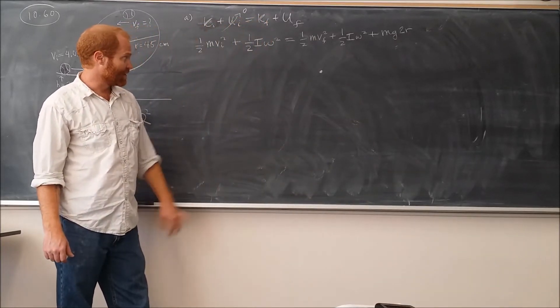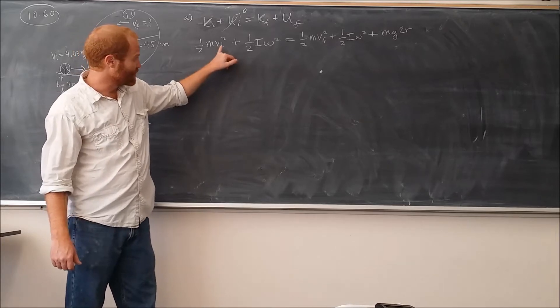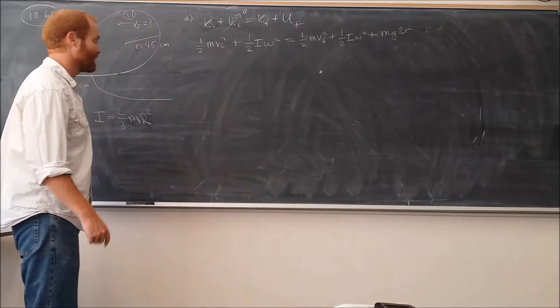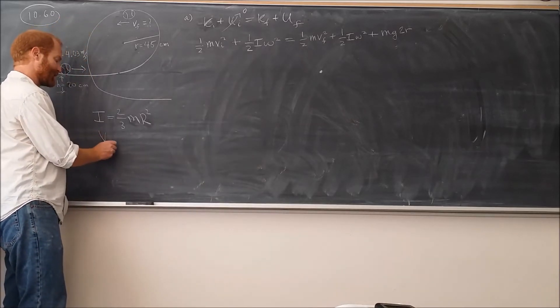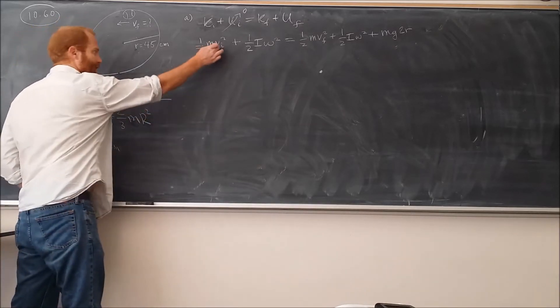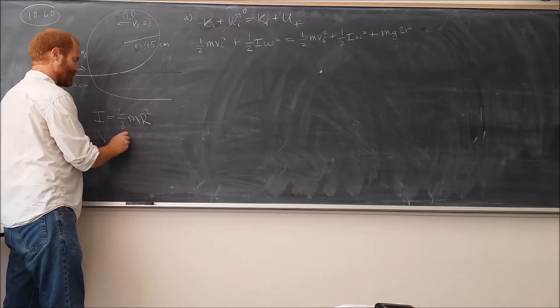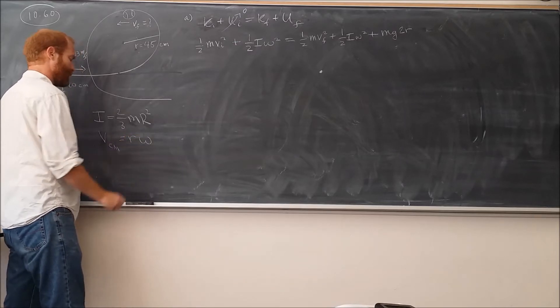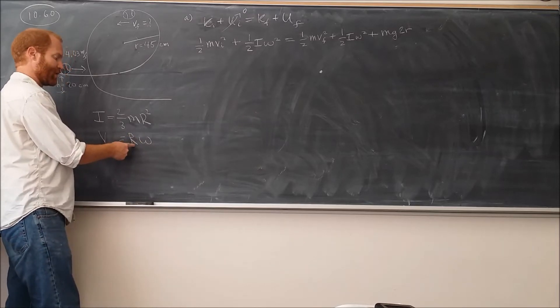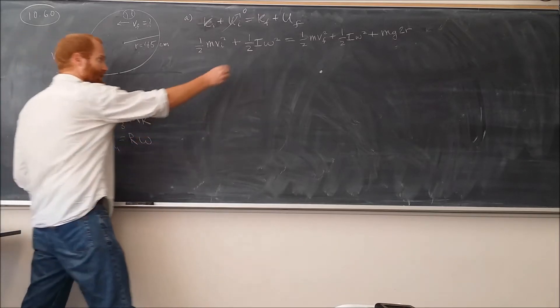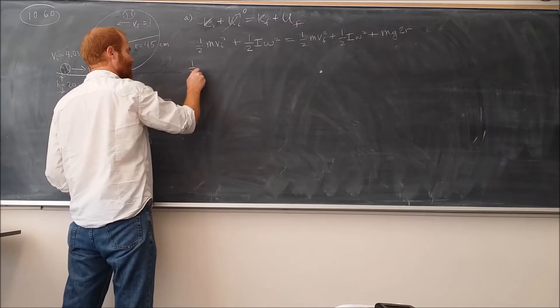The next thing to do is to try to group together this term and this term by saying that if it's rolling in this direction, that its center of mass velocity is equal to R times omega. That's to say R here, where R is the radius of the ball. And we can replace omega here using that. So let's do that.